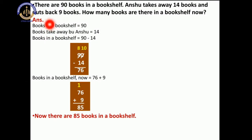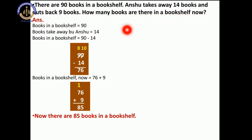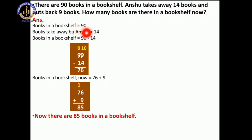Now next: there are 90 books in a bookshelf. Anshu takes away 14 books and puts back 9 books. How many books are there in the bookshelf now? Books in the bookshelf is equal to 90. Books taken away by Anshu is equal to 14. So 90 minus 14: we take a borrow, cut 9 put 8, cut 0 put 10. 10 minus 4 is 6, and 8 minus 1 is 7. Now we have 76 books.